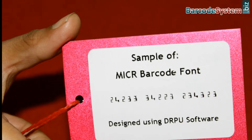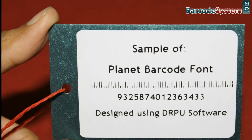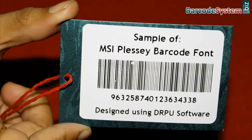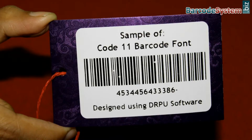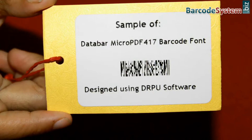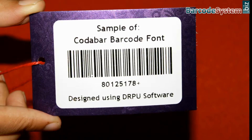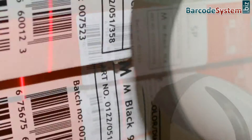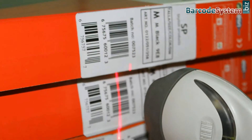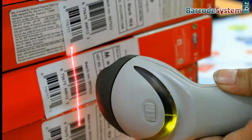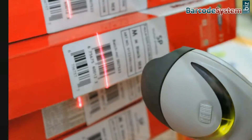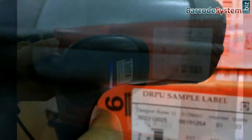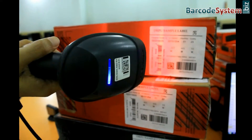In this video we are going to discuss features of barcode label fonts. Barcode labels are used to track the information of the object to which it is attached. Barcode labels are of two types: linear and 2D.